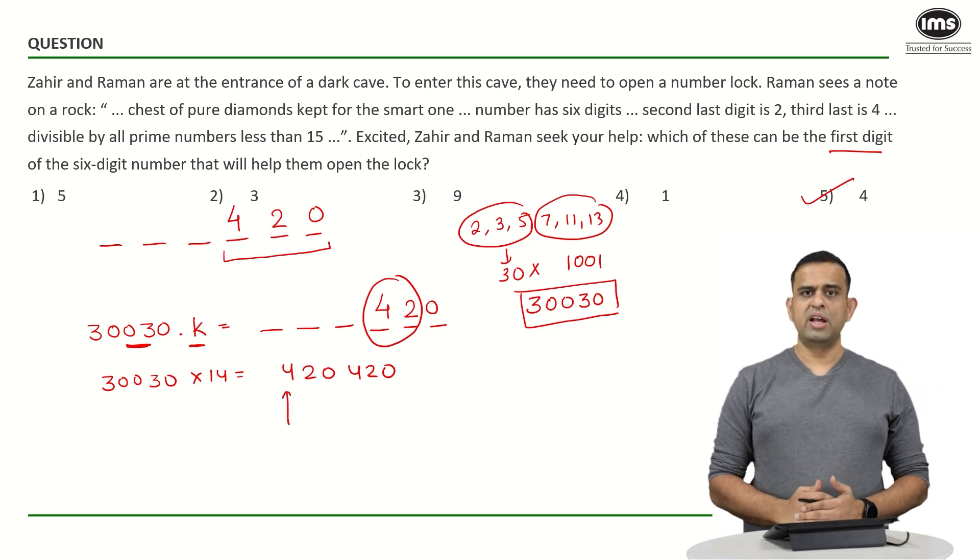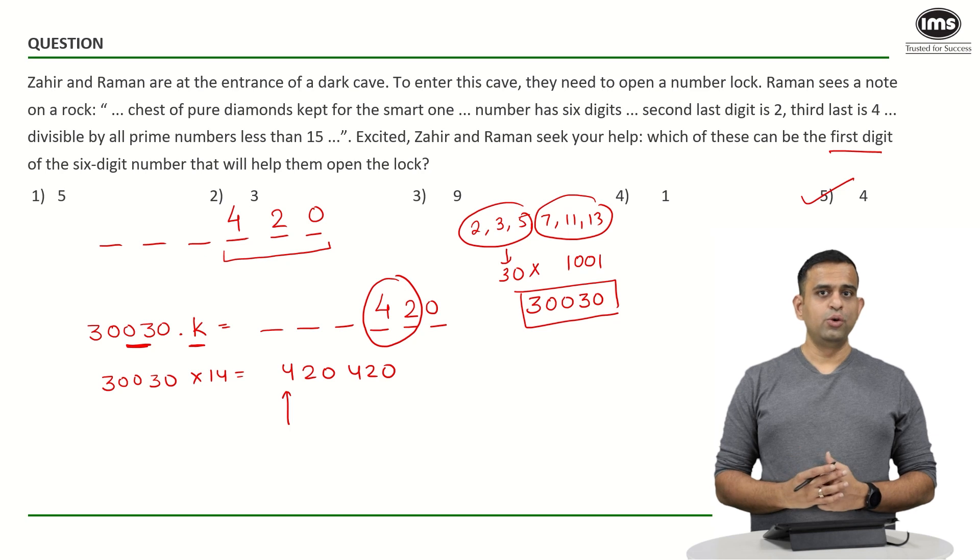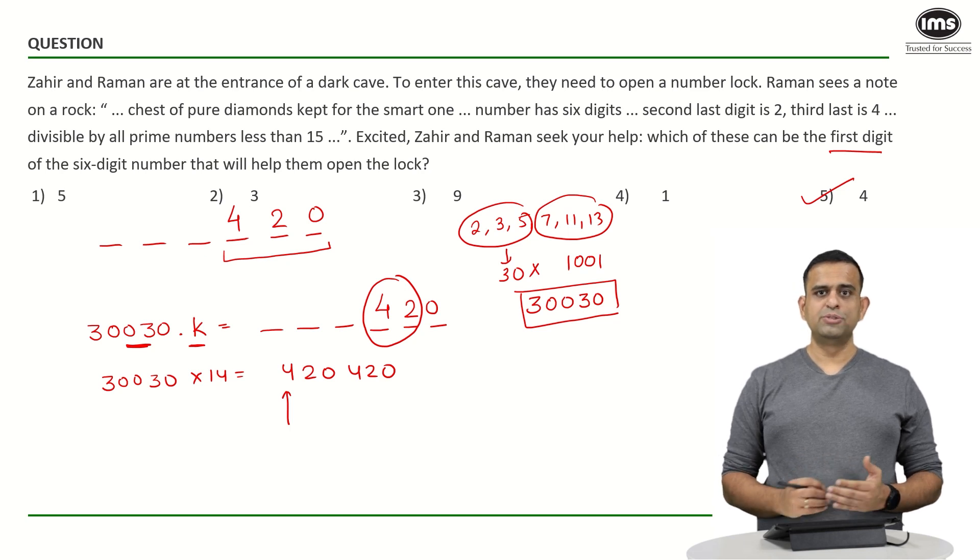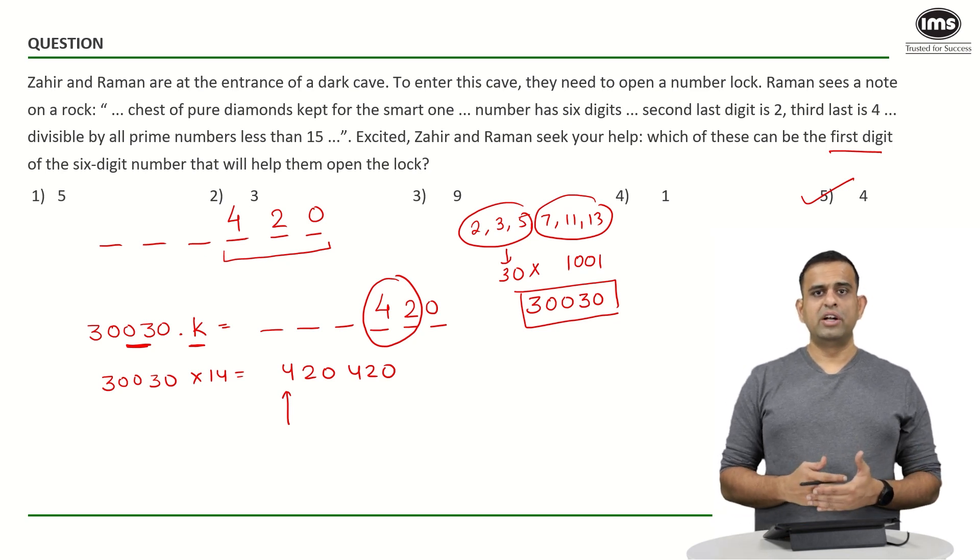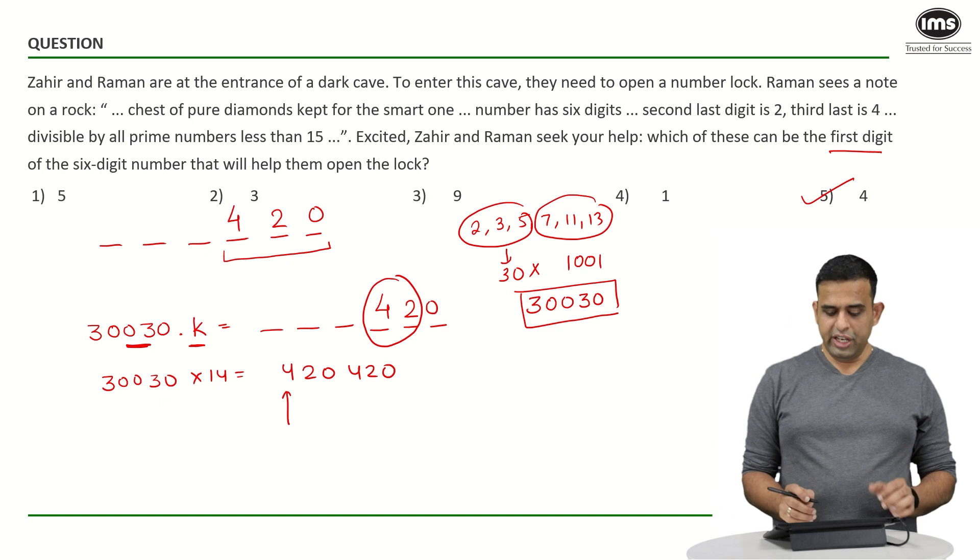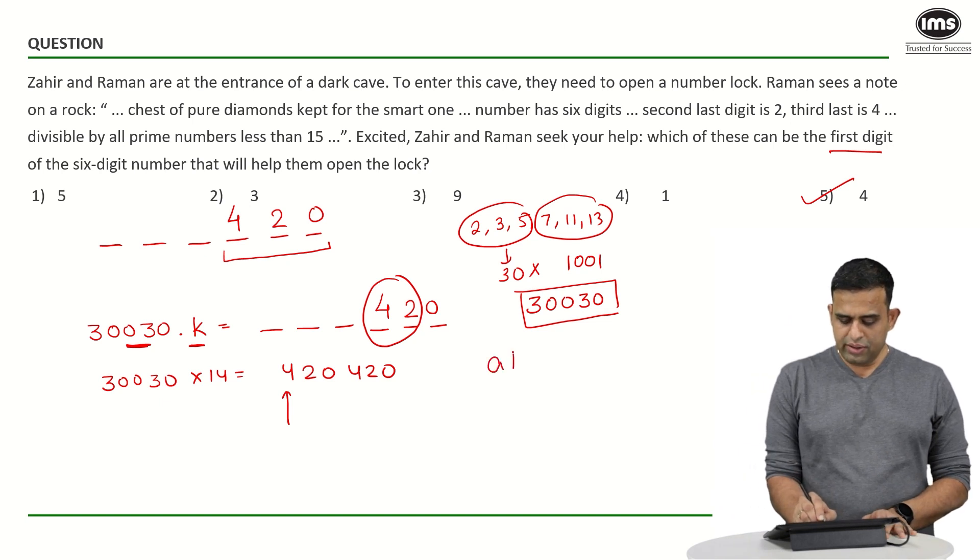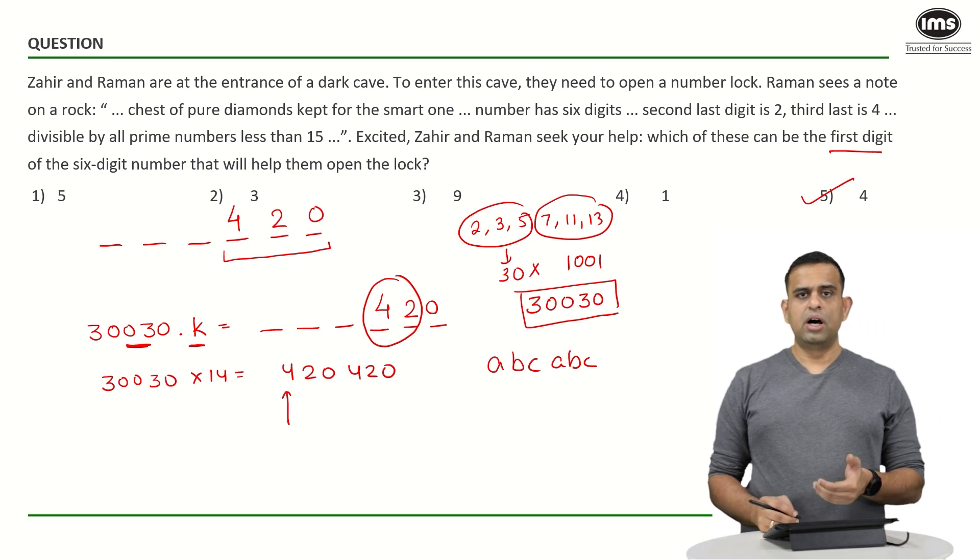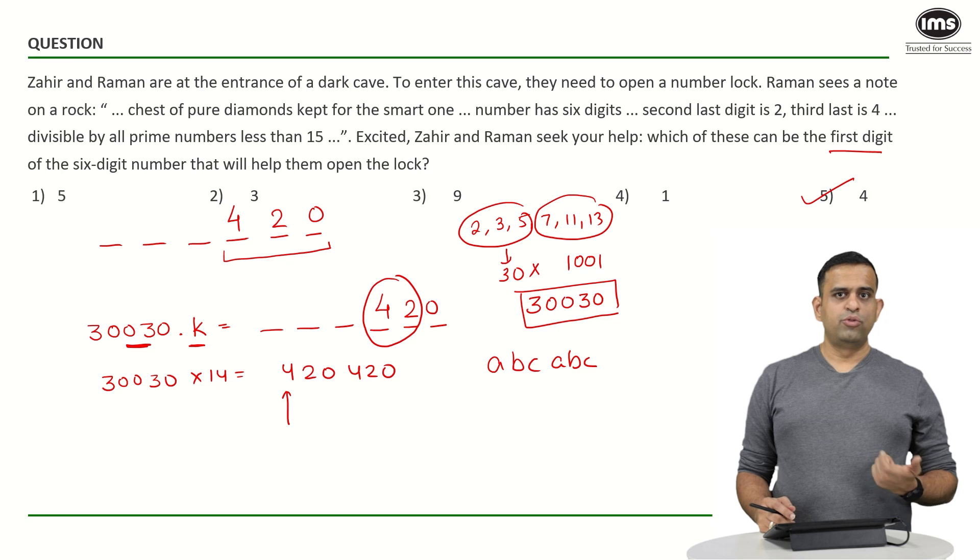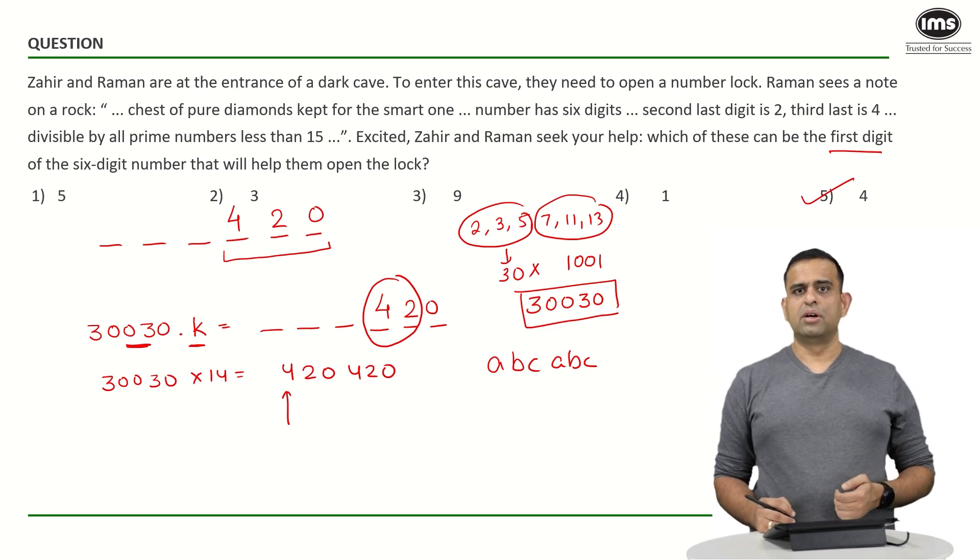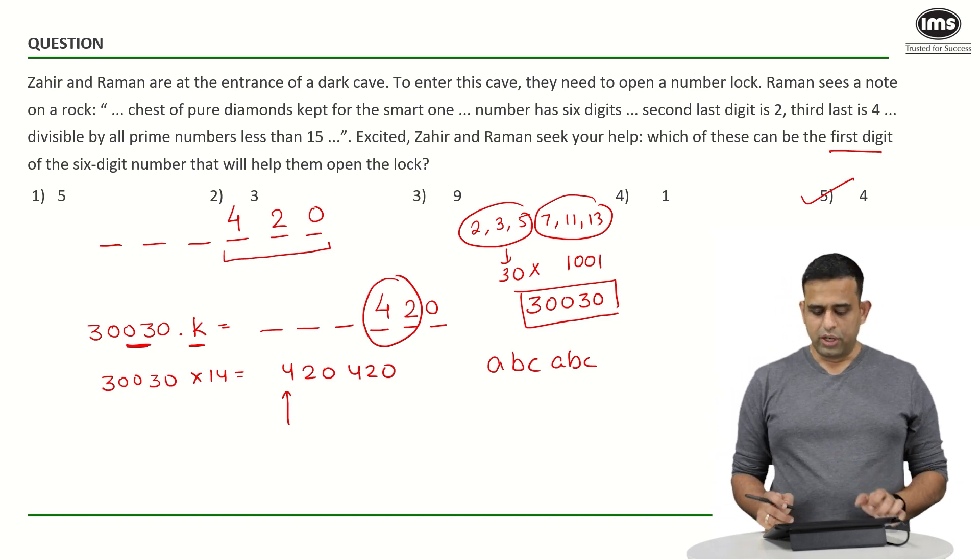So option number 5 becomes my answer. Now one thing to note that people who know this property that for a number to be a multiple of 7, 11 and 13 it has to be a multiple of 1001. So any number of the form ABC ABC is always a multiple of the number 7, 11 and 13.